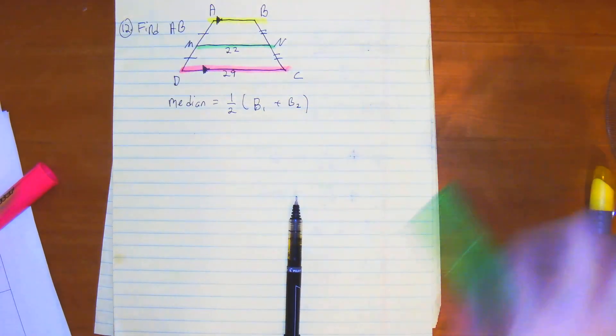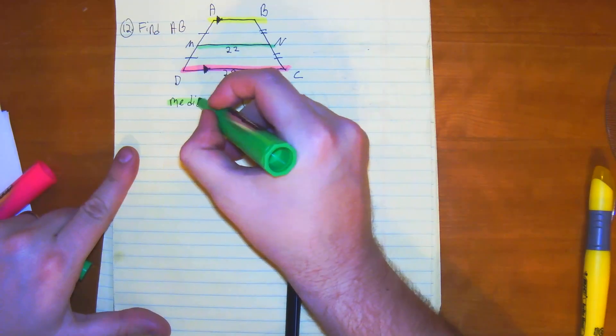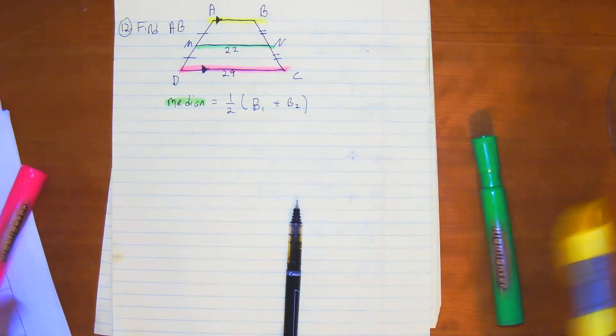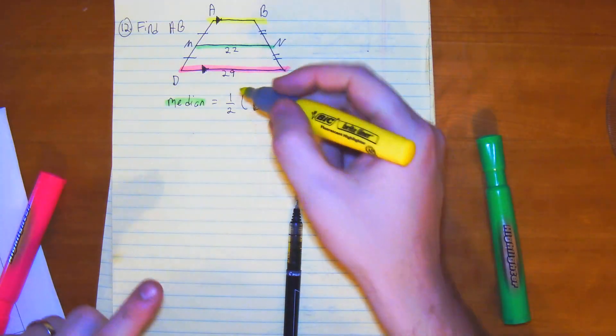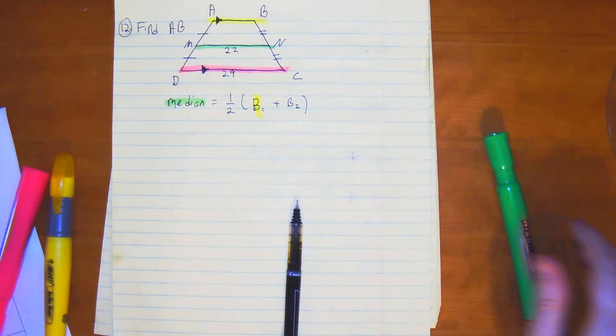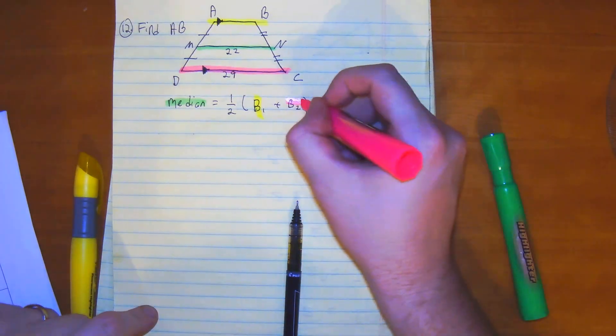The median in this problem is going to be MN. Base 1 doesn't matter, the order. We can just say base 1 is going to be AB. Then we can say that base 2 is DC.